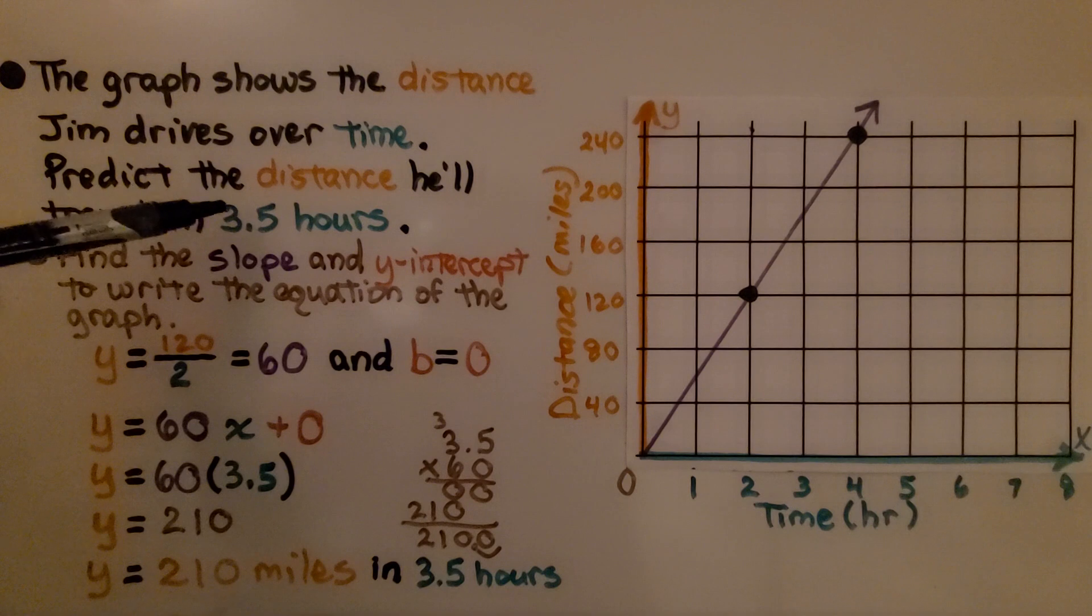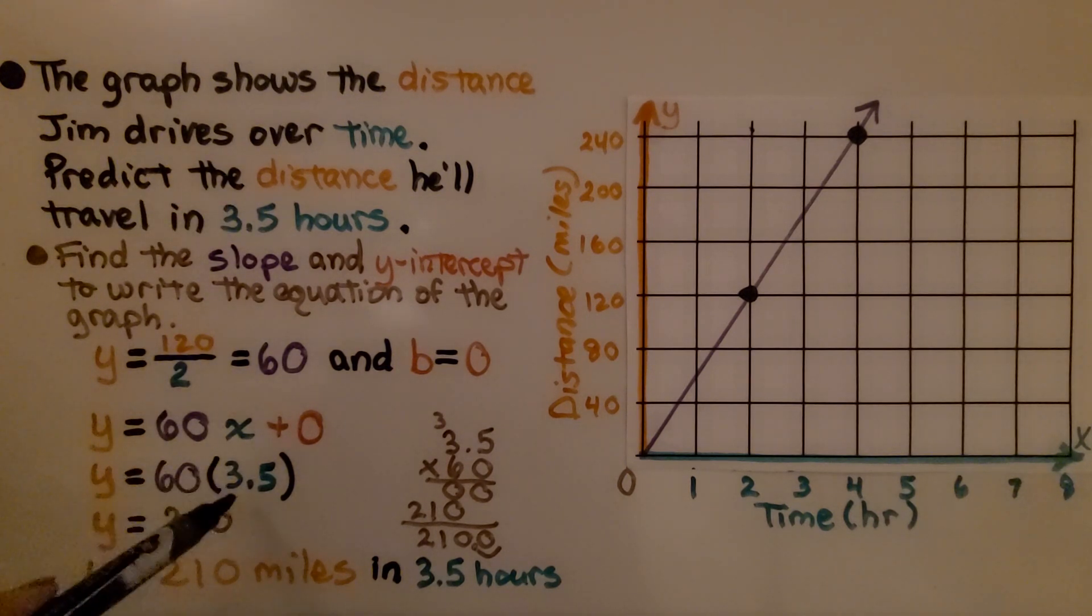We need to know 3.5 hours. We substitute 3.5 for x. We do 60, the slope, times that x value, 3.5. We get 210 and we know that y is equal to 210 miles. That means Jim will drive 210 miles in 3.5 hours.